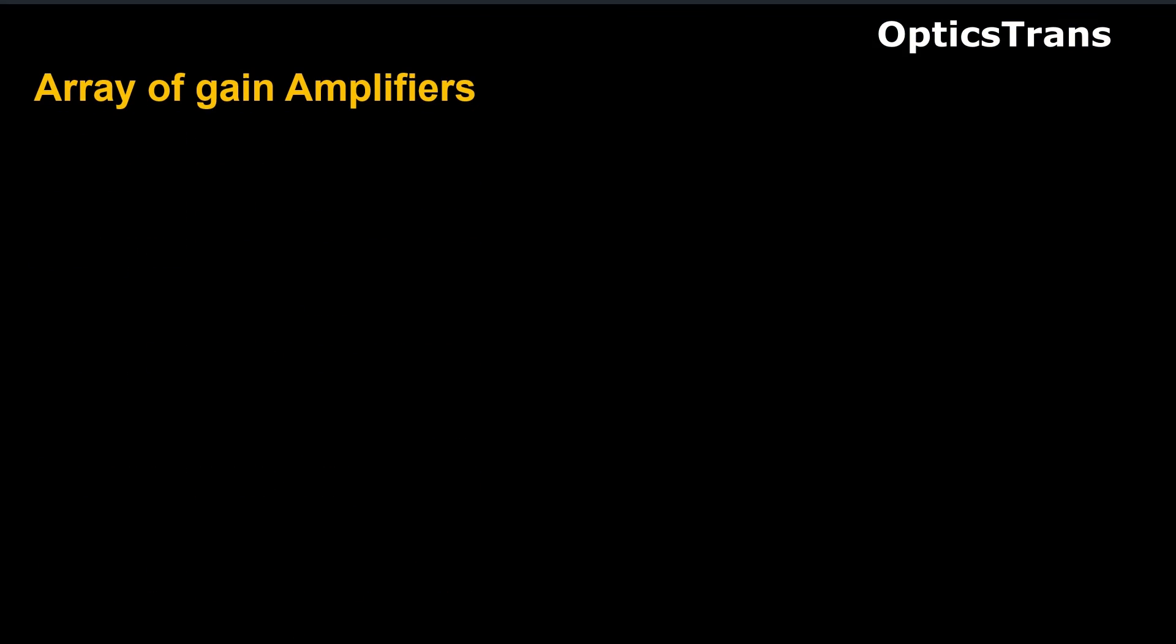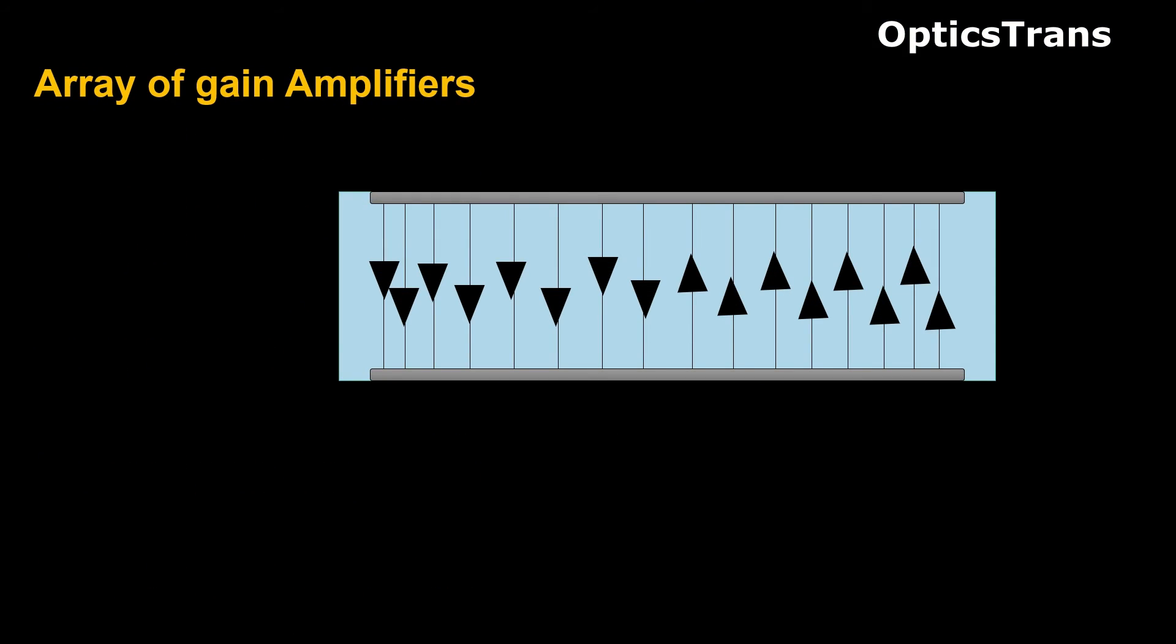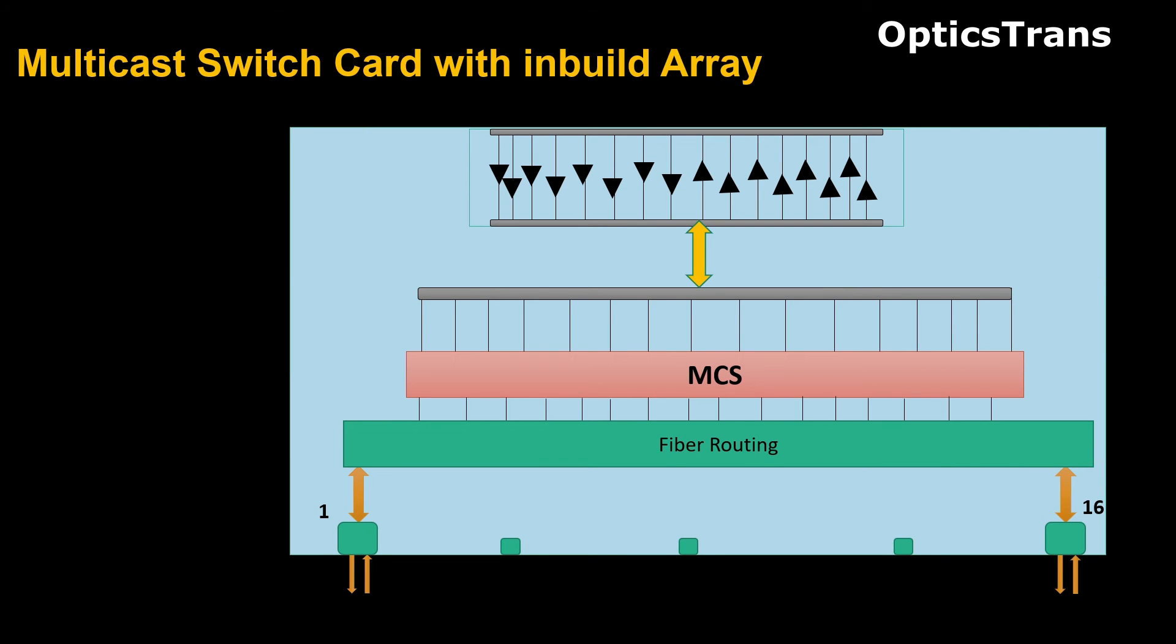Next is array card. This card has eight fixed gain amplifiers used to offset the losses from the MCS card. One side, it connects with MCS, and other side with WSS using MPO cables. You may not see array card as some manufacturers integrated the array card with MCS, means MCS inbuilt having array card.